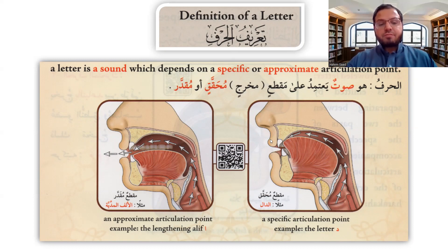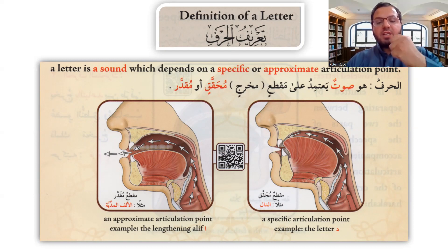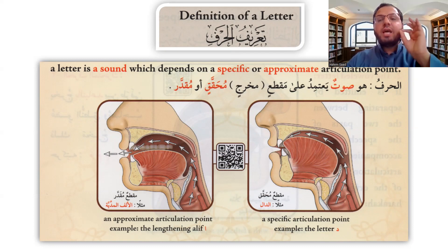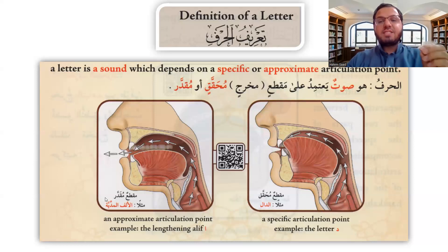As you can see here, the letter dal is pronounced 'da.' We pronounce dal by closing and making the tongue go up to touch the gums, stressing at a specific articulation point, and we say 'ad-da.' This is called a specific articulation point. However, in alif, waw, and ya, these are called estimated articulation points, and this is the definition of a letter.